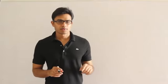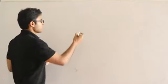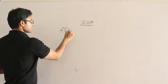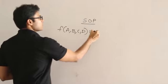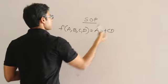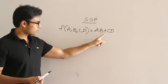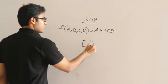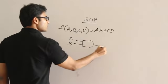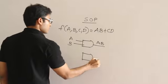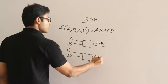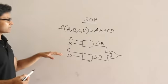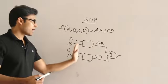Any function can be minimized to either sum of products or product of sums. For example, if it is sum of products, say a function of A, B, C, D and when you minimize it you get something like AB plus CD, then this is nothing but ORing of AND terms. So you first apply the AND gate, then OR the outputs — this is called AND-OR realization.